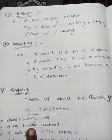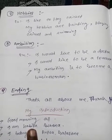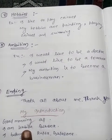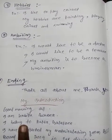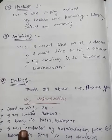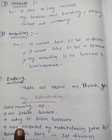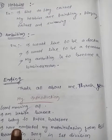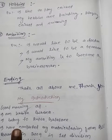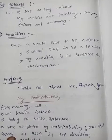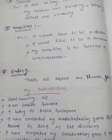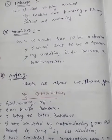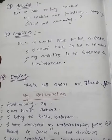The seventh stage is hobbies — you have to tell your hobbies. For example: 'I like to play cricket' or 'My hobbies are painting, playing cricket, and swimming.' The next step is ambition. You have to tell your ambition in the self-introduction. For example: 'I would like to be a teacher,' 'I would like to be a doctor,' or 'My ambition is to become a businessman.' Then the ninth step is ending — you end with: 'That's all about me. Thank you.' These are the nine steps you should follow for self-introduction.